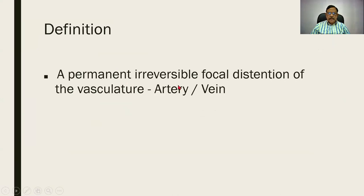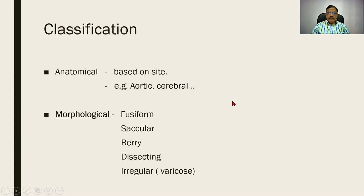The definition: a permanent, irreversible focal distension of the vasculature — which might mean artery or vein. Classification is an aid to orderly thinking. And when I say classification, it can be an anatomical classification, morphological classification, or an etiological classification.